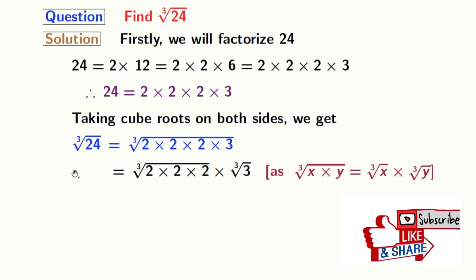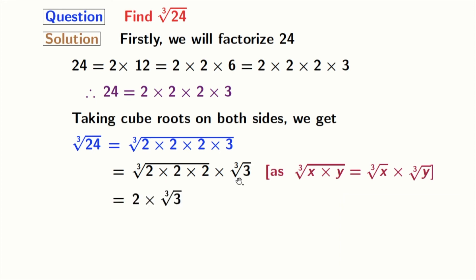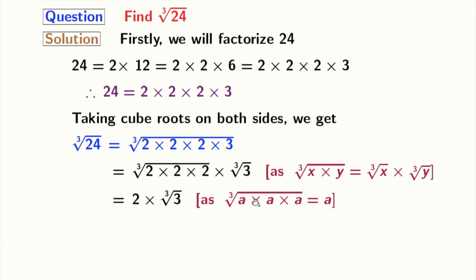From the first cube root we get 2, and the second cube root, that is cube root of 3, remains the same. In the first cube root we have used the rule that cube root of a times a times a is equal to a, where a is 2. After simplification we get 2 cube root of 3, and this is our final answer.